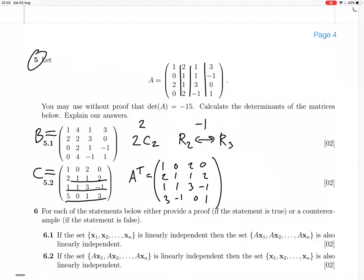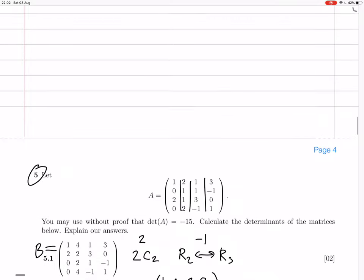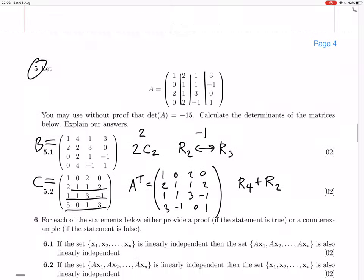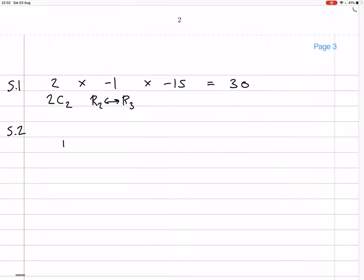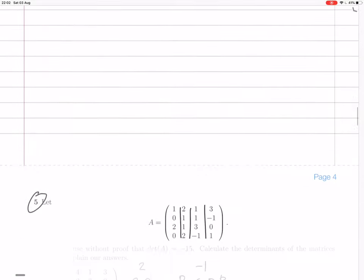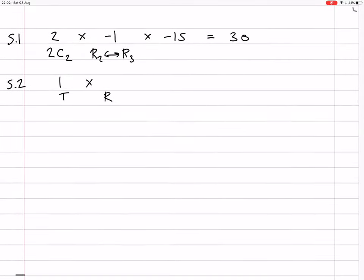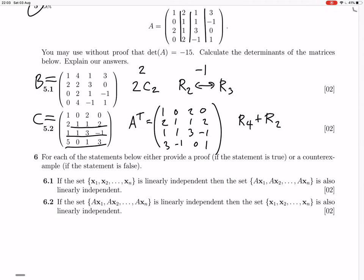Okay, so the transpose and then row 4 has row 2 added to it. So the transpose will not change the determinant, nor will the other operation, actually. So we're going to go transpose doesn't change anything, and then row 4 gets row 2 added to it, doesn't change things. The old determinant is minus 15, so the new determinant is still minus 15. Okay, that's it.